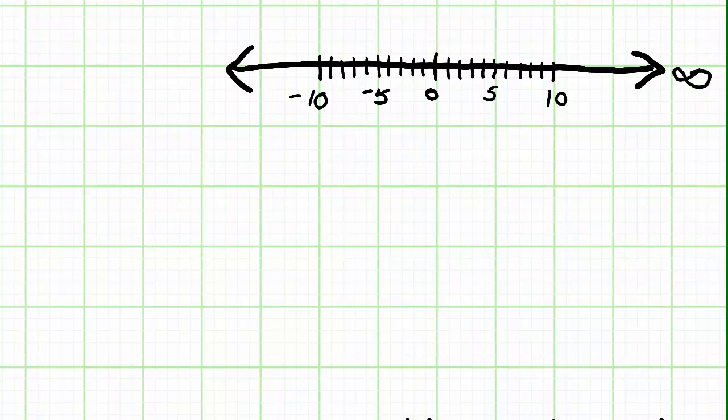An interval is an area on the number line, and these sideways 8's I'm drawing are infinity signs. The one with a negative sign in front of it is called negative infinity, and it means go forever to the left. The sideways 8 without a negative sign in front is called positive infinity, and it means to go forever to the right.